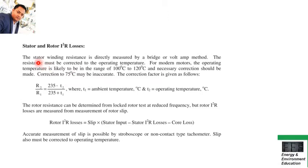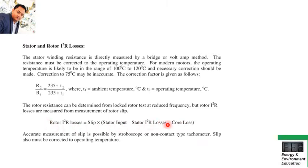Another important formula is for stator winding resistance: R2 divided by R1 equals (235 + T1) divided by (235 + T2), where T1 is the ambient temperature and T2 is the operating temperature, both in degrees centigrade. For the calculation of rotor I²R losses, the formula is: slip multiplied by stator input, minus stator I²R losses, minus core loss. You must memorize and understand this formula as they may ask various numerical questions from it.